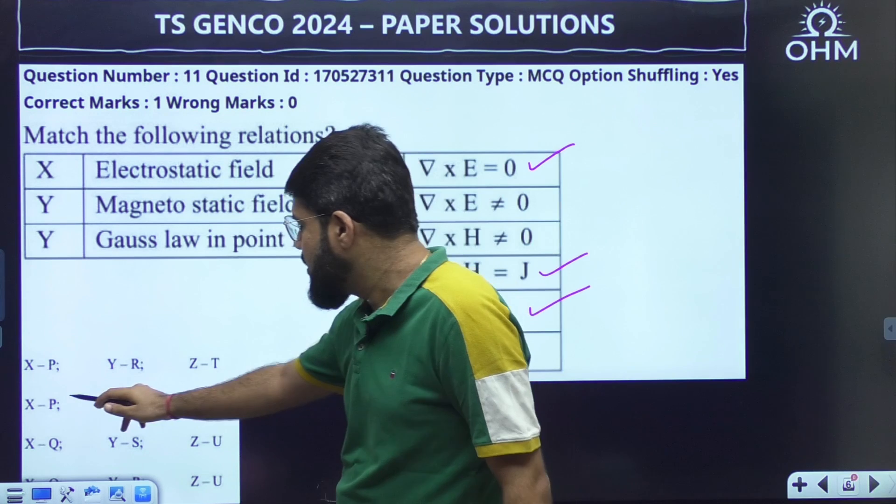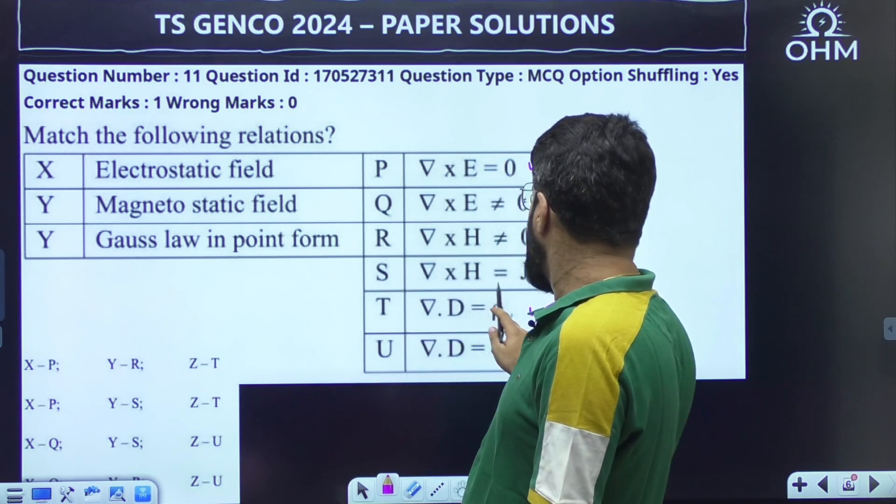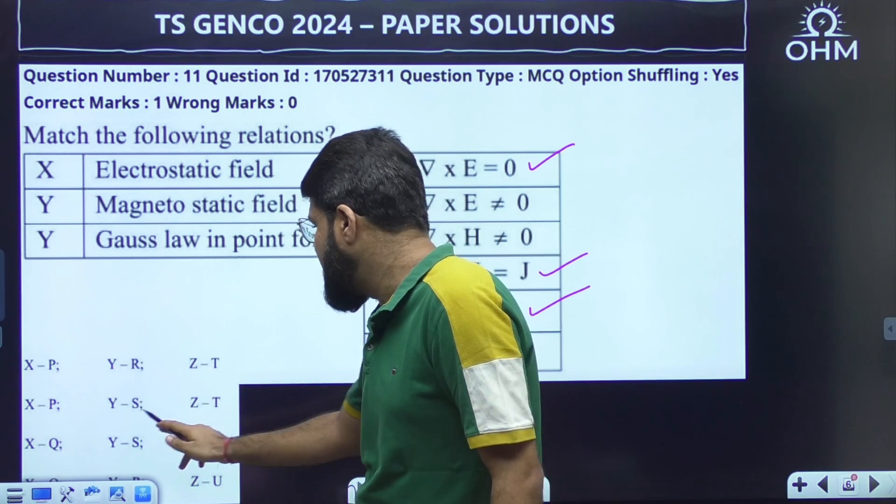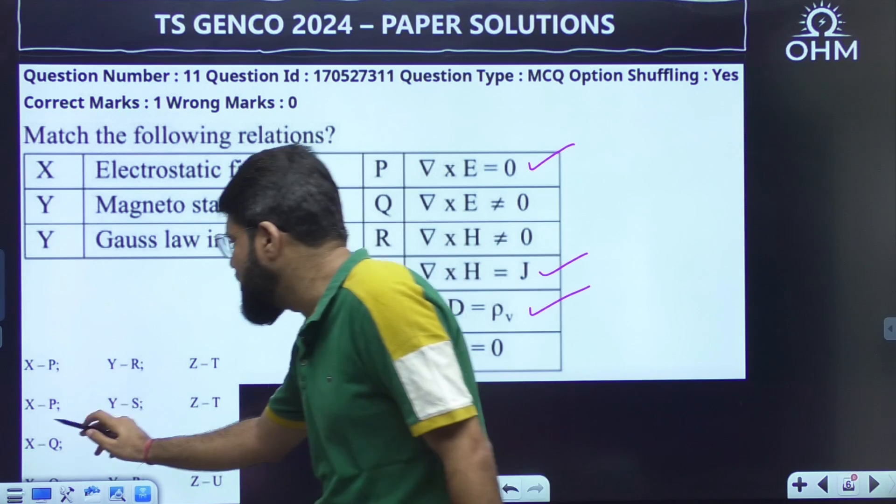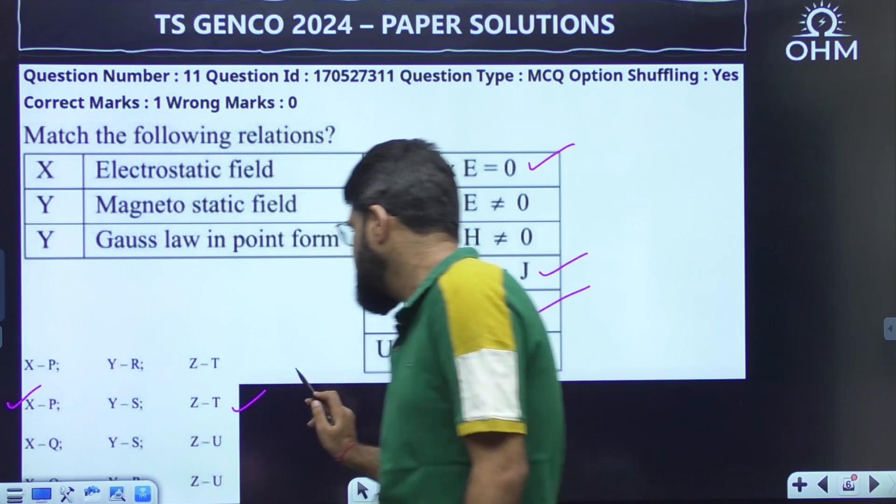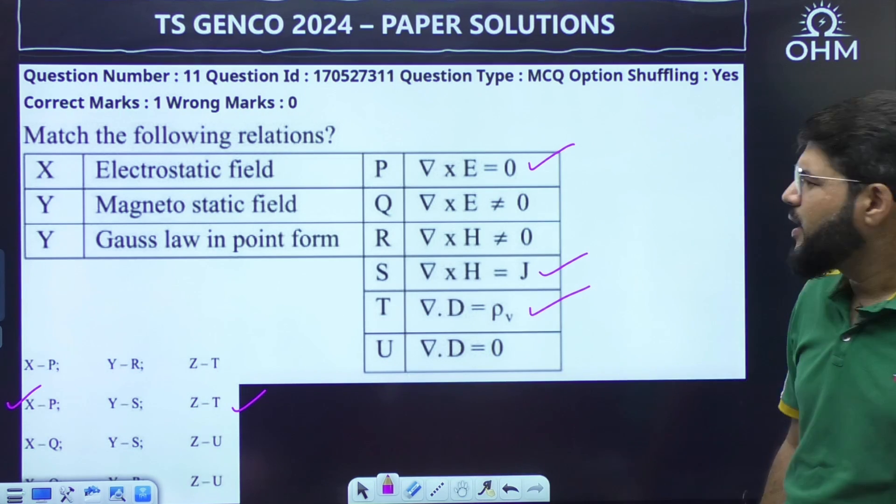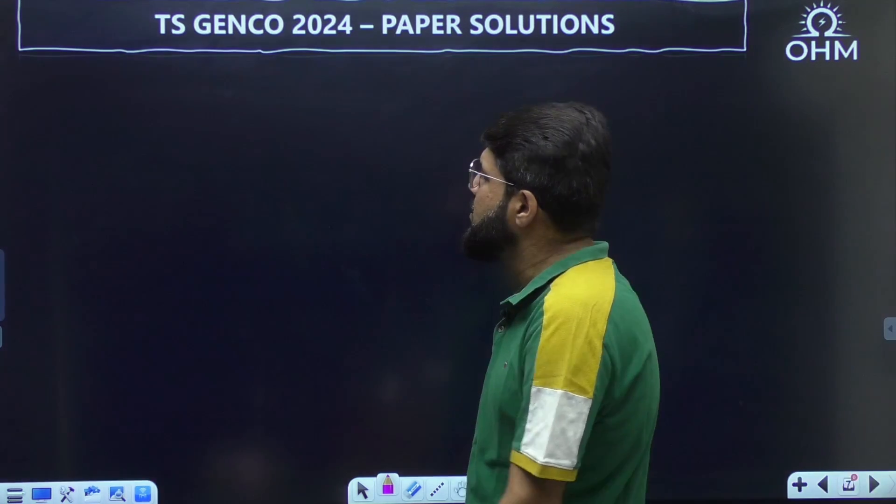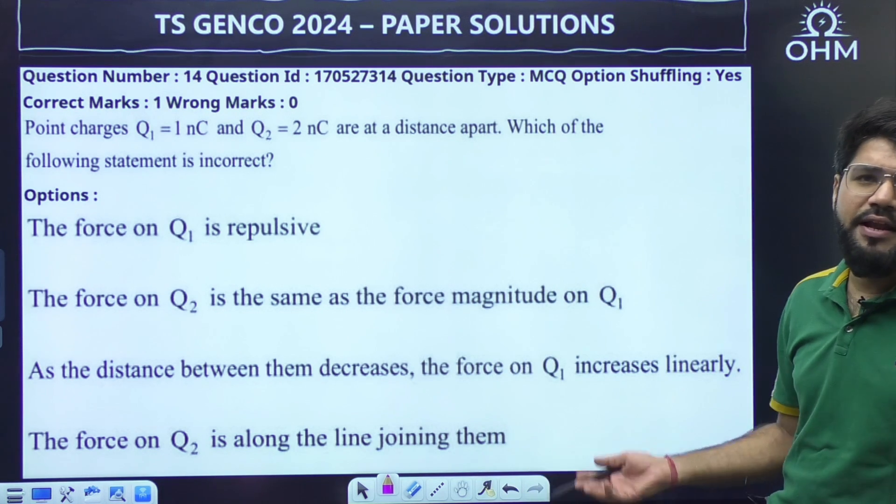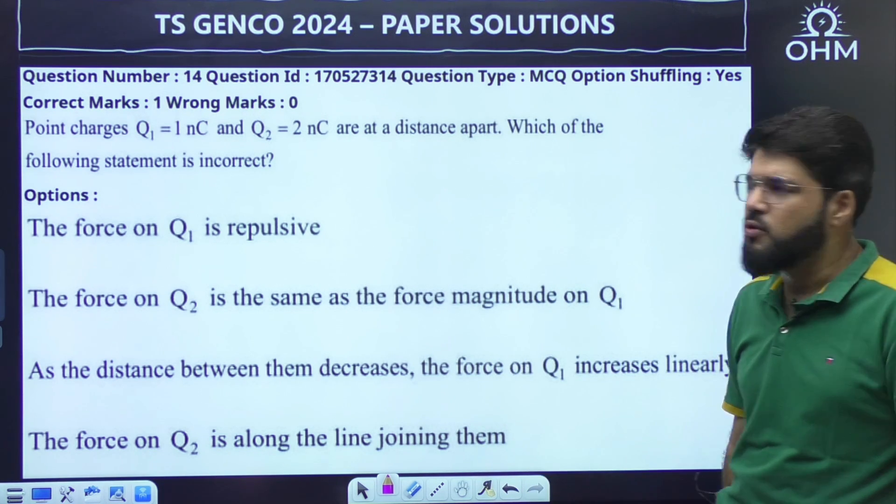X matches with P, Y with S and Z with T. Option number B. The correct answer is option number B here. Straightforward, direct question. Next one, again a very direct question from Coulomb's law, very easy electromagnetics.